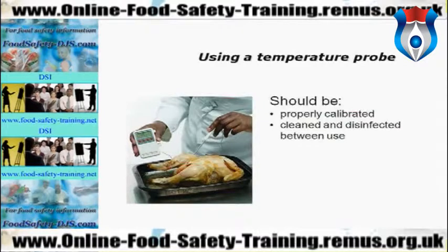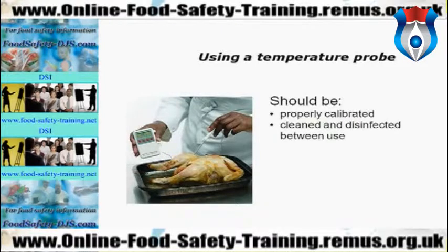To use a temperature probe, it should be properly calibrated — the LCD reading should reflect the temperature inside the food product. For self-calibration, check both ends of the scale: insert the probe into freshly boiled water — it should register 100 degrees Celsius plus or minus one degree — and into iced water, where it should register 0 degrees Celsius plus or minus one degree. If it is out by more than one degree, the probe is faulty. The probe should also be cleaned and disinfected between uses, using probe wipes or boiled water.